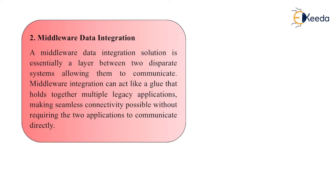Next is middleware data integration. This is essentially a layer between two disparate systems allowing them to communicate. Middleware integration acts like a glue that holds together multiple legacy applications, making seamless connectivity possible without requiring two applications to communicate directly. It performs the combination, but gives access to the data only to those who need it — no one else can access it.